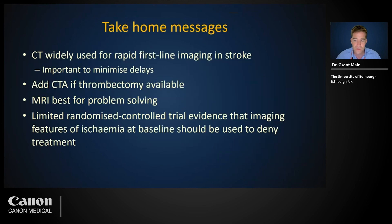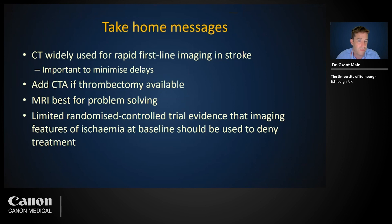In conclusion: CT is widely used for rapid first-line imaging of stroke, but it is really important to minimise delays. We should add CTA if thrombectomy is available. MRI is best for problem solving. Finally, there is limited randomised controlled trial evidence that baseline imaging features of ischemia should be used to deny patients treatments for stroke.